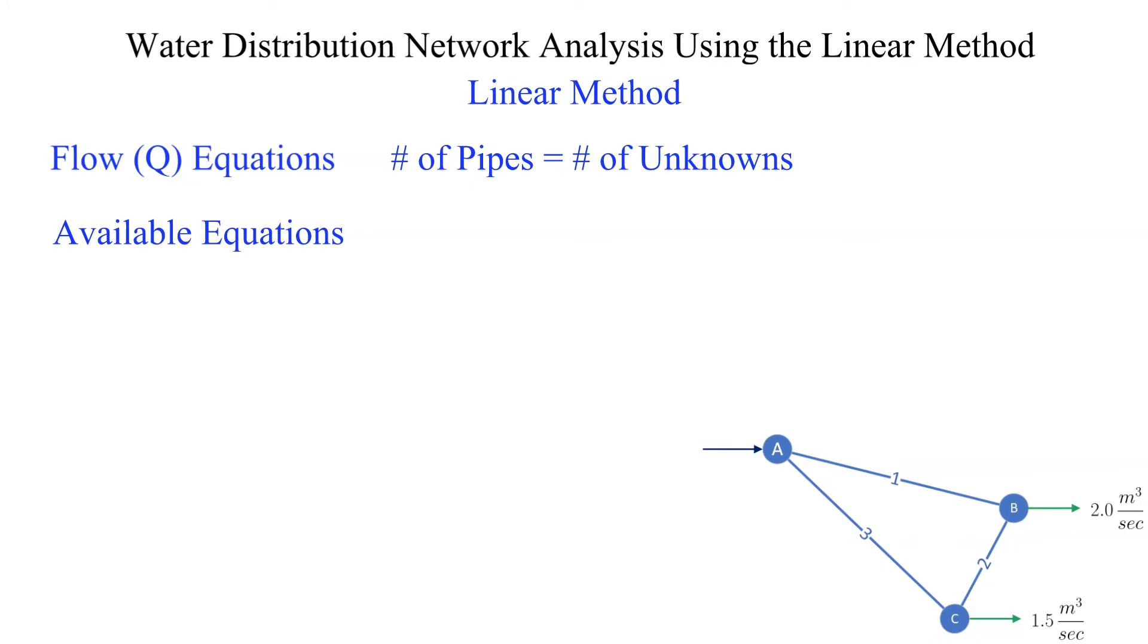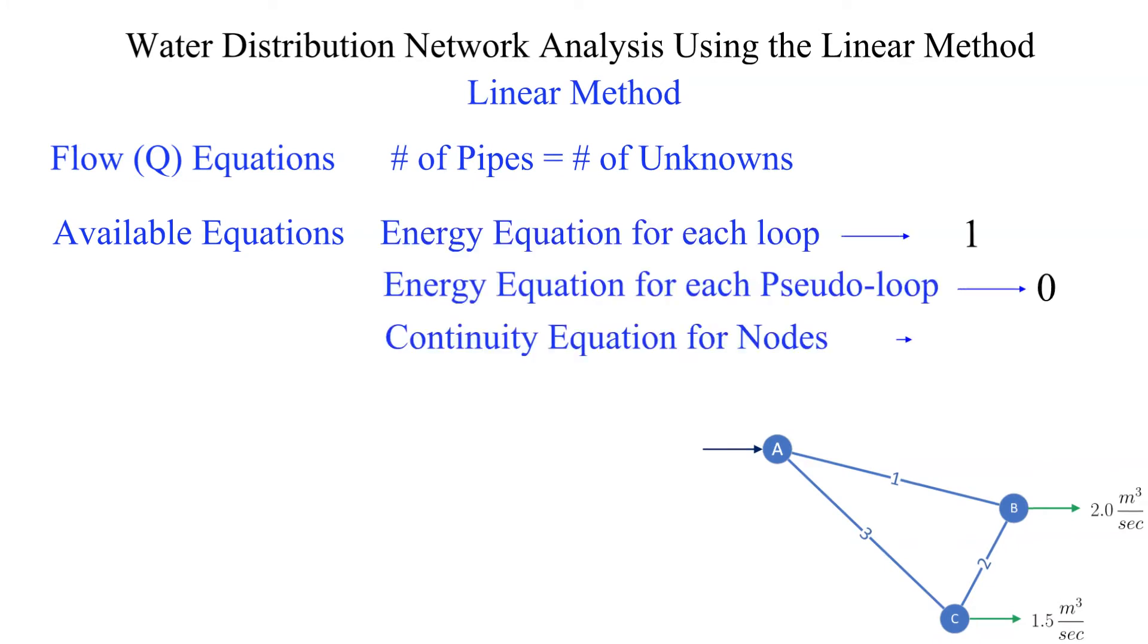In this network there is a single loop, no pseudo loops and three nodes. We only need three equations so we will only be using equations for two of the nodes.